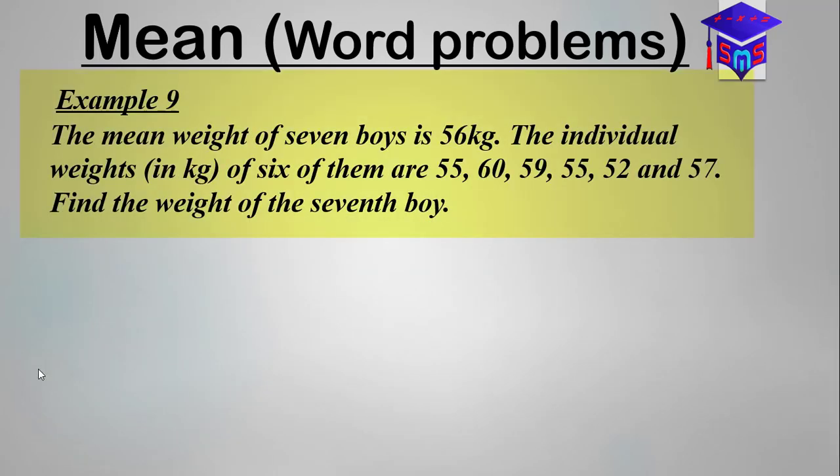In the next video, we'll look at this interesting question which says that the mean weight of seven boys is 56 kilograms. The individual weights in kilograms of six of them are 55, 60, 59, 55, 52, and 57. Now we are to find the weight of the seventh boy.